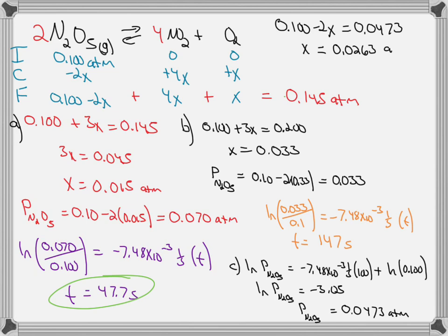Now knowing x, remember the total pressure is equal to 0.1 plus 3x. So the total pressure will be 0.1 plus 3 times 0.0263, or 0.179 ATM. I hope that helps.